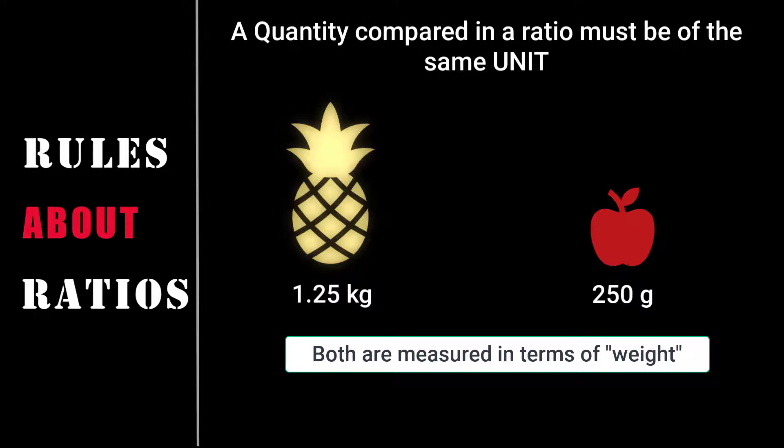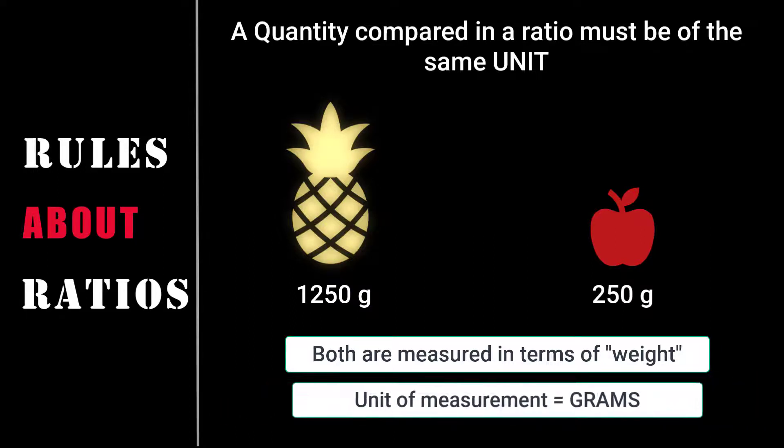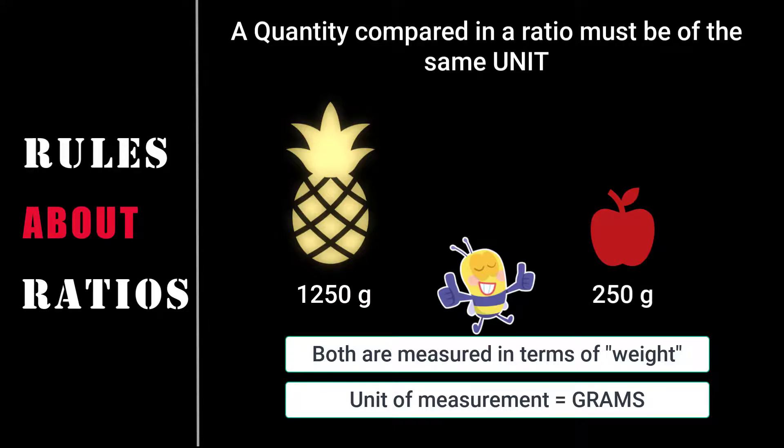So as per the rule, the ratio must be of the same unit and only then it can be compared. So what do we need to do? We need to convert it to a common unit, meaning either to grams or kilograms before we compare the quantities. Now the weight of the pineapple has been converted to grams. We know that 1 kilogram is equal to 1000 grams. So 1.25 kg in grams is represented as 1250 grams. Now both the weights are in grams, so we can compare because the rule states the ratio must be of the same unit.